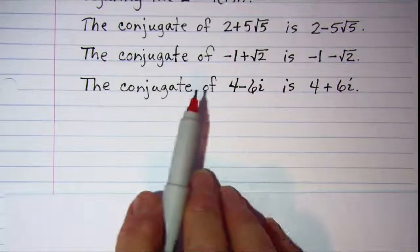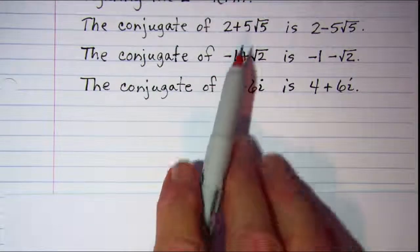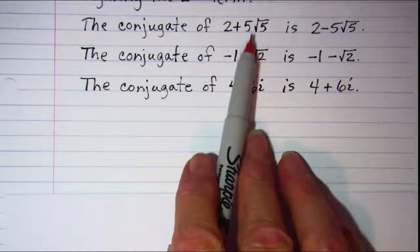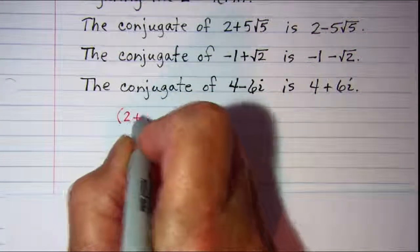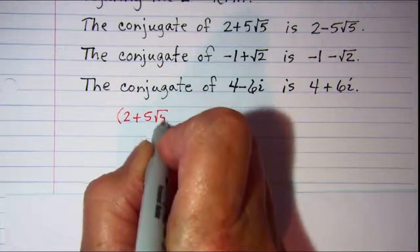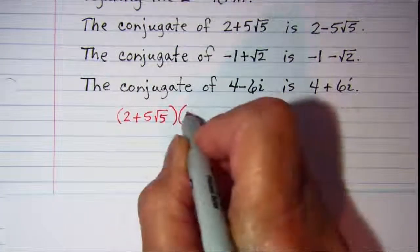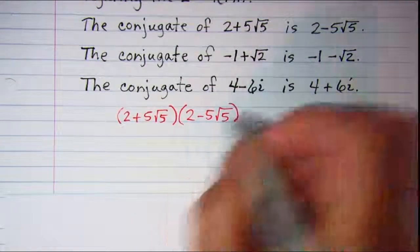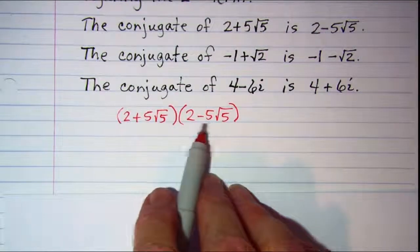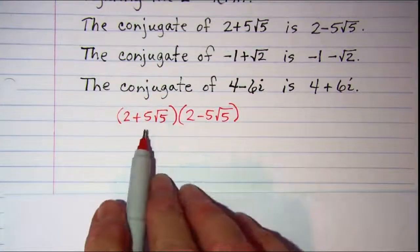Now the reason for multiplying by the conjugate, let me just show one of these. I'll take this first one. If I multiplied 2 plus 5 root 5 times 2 minus 5 root 5, we'll just multiply the binomials with FOIL like we normally would.